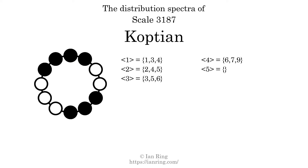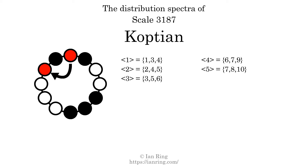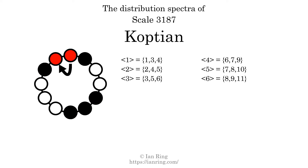The generic interval of 5 scale steps comes in 3 different specific interval sizes: 7 semitones, 8 semitones, and 10 semitones. The spectrum width of this generic interval is 3. The generic interval of 6 scale steps comes in 3 different specific interval sizes: 8 semitones, 9 semitones, and 11 semitones. The spectrum width of this generic interval is 3.